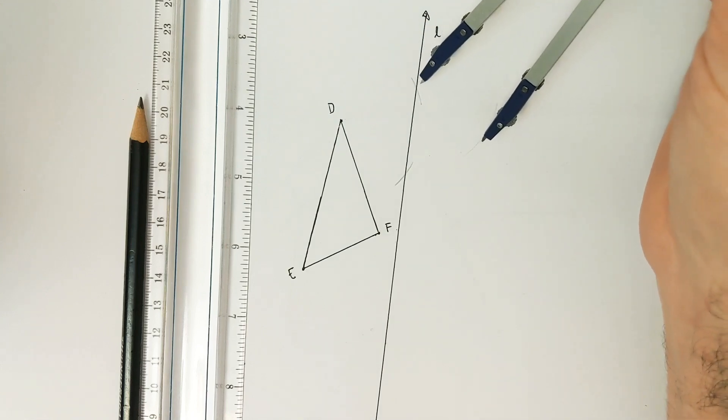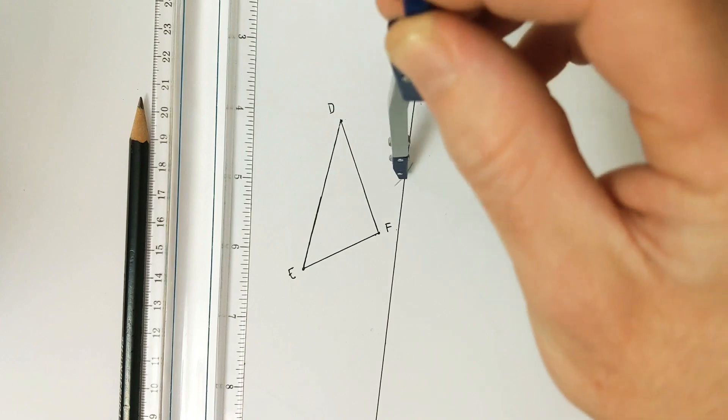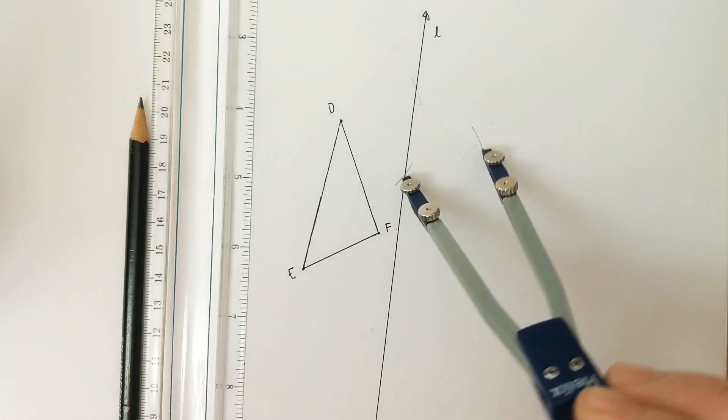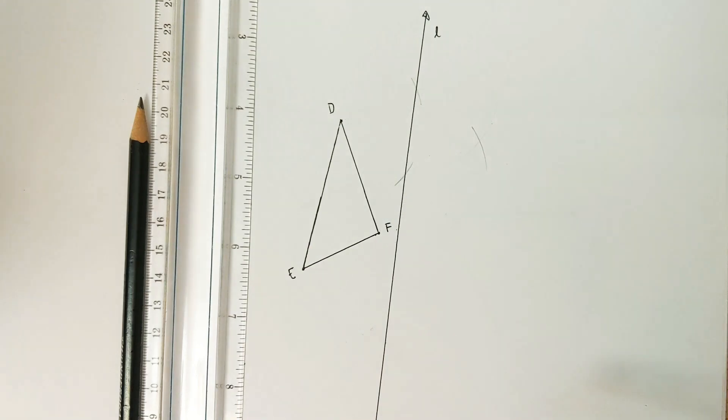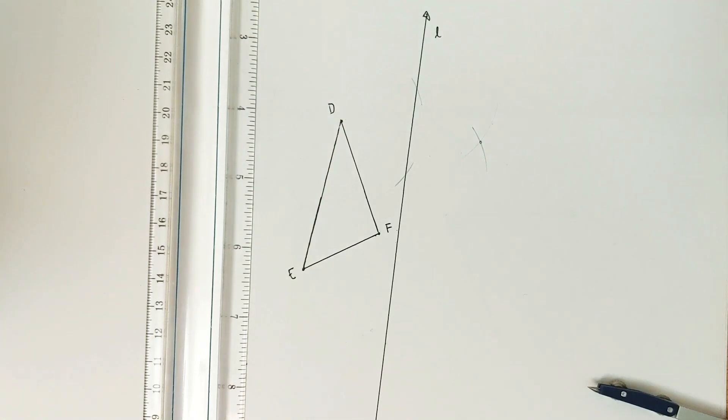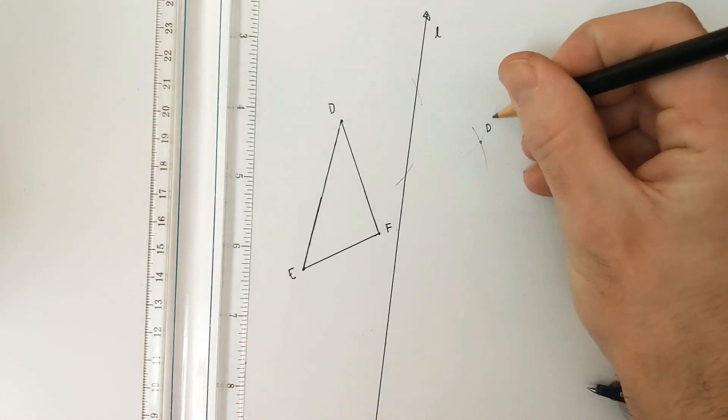Again, keep the exact same radius as the key here. And then put your metal point on the other intersection. And draw enough of an arc to see where they cross. And that point is our reflection, D prime.